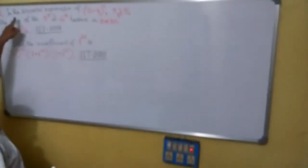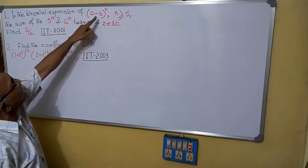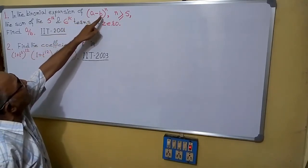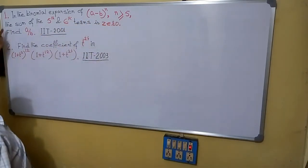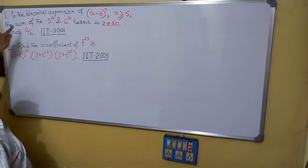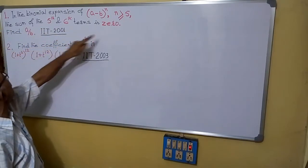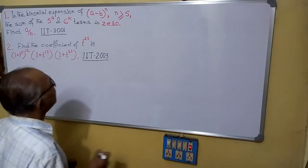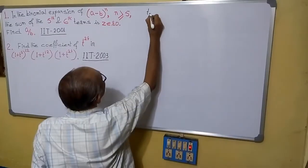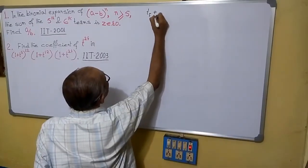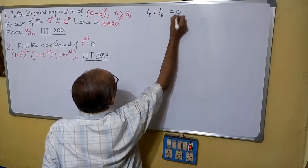See the first sum. In the binomial expansion of (a minus b) whole to the power m, when m is greater than or equal to 5, the sum of the fifth and sixth terms is zero. Find a/b. So what is given? T5 plus T6 equals to zero.